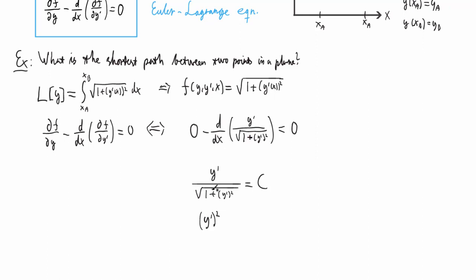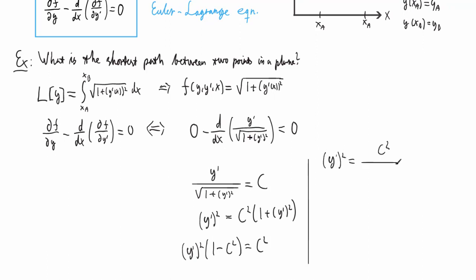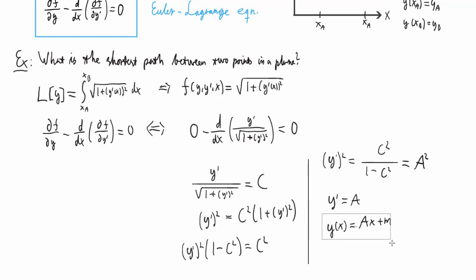By integrating, we obtain that y' divided by the square root of 1 plus y' squared equals a constant. Squaring and rearranging, we find that y' squared equals a constant, which we rename a². Taking the square root gives y' = a. Integrating once more, we get y(x) = ax + m, which is of course the equation for a straight line — just as we expected. So the Euler-Lagrange equation can solve this particular simple problem.